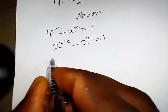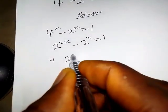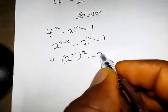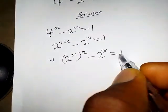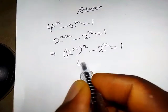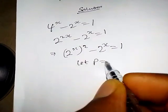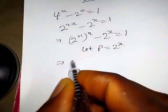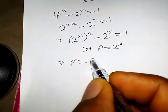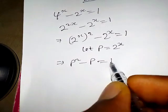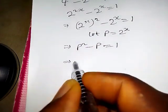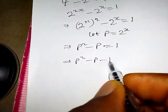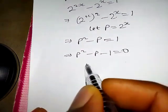This can be written as 2^x times 2 raised to the power x minus 2^x equals 1. Let p equals 2 raised to the power x. This implies p squared minus p equals 1, which also implies p squared minus p minus 1 equals 0.